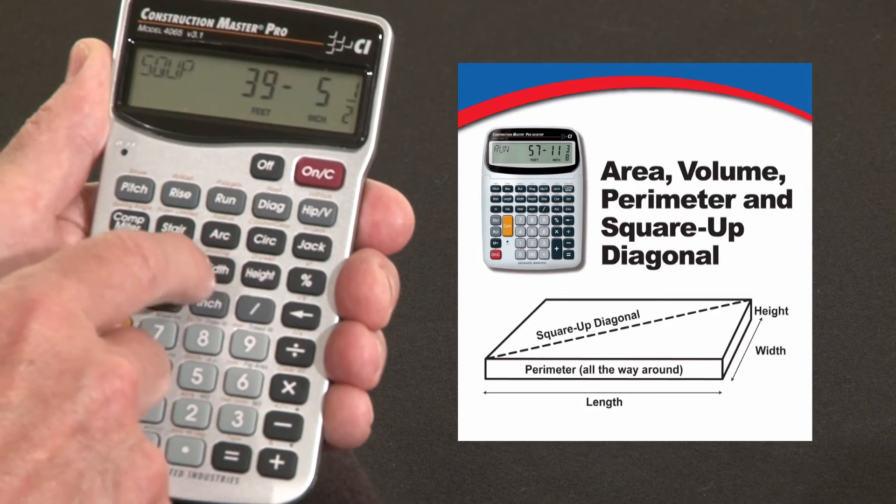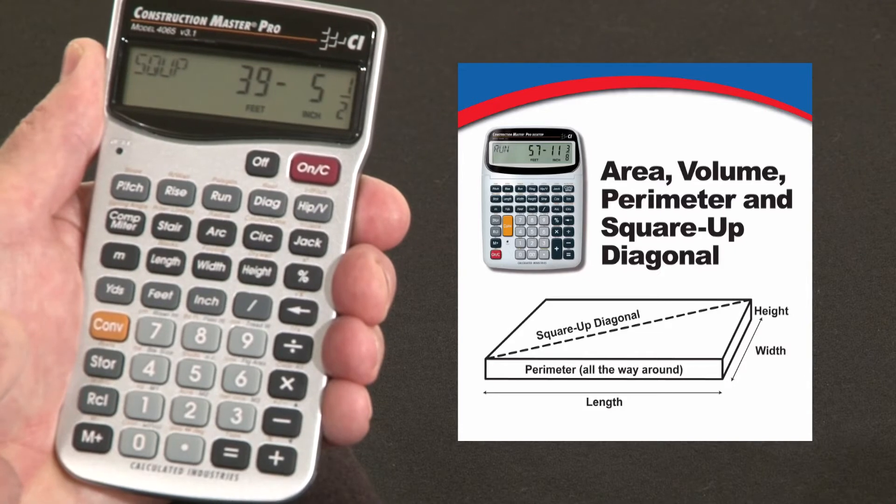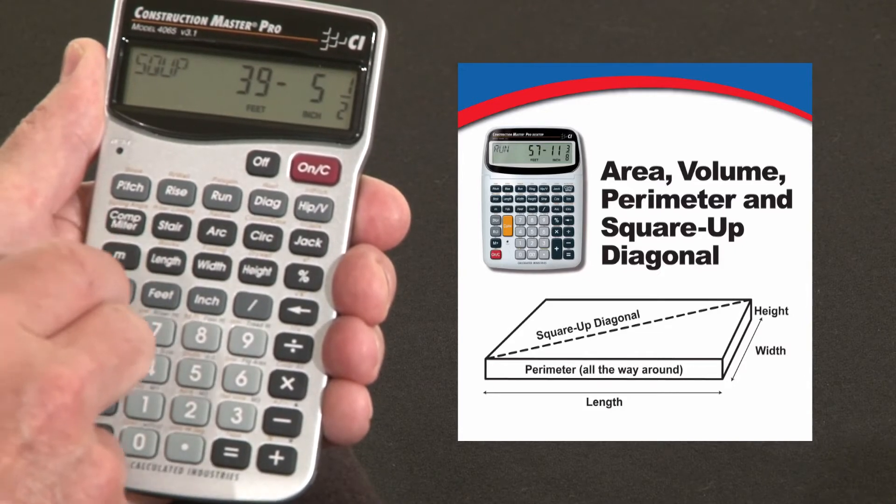I can press it again. It gives me the square up diagonals. So if you're going to be setting forms or pulling a tape, that's what you want to measure to get square 90-degree corners.